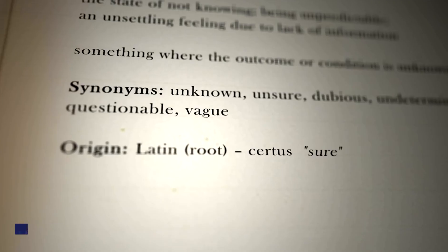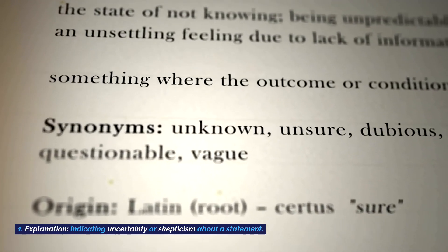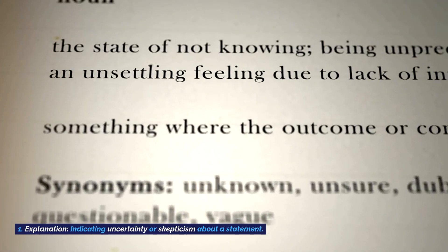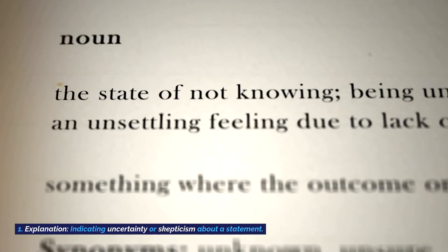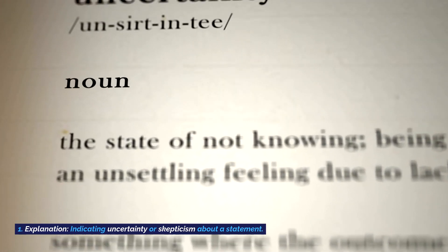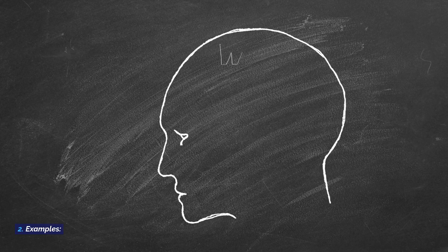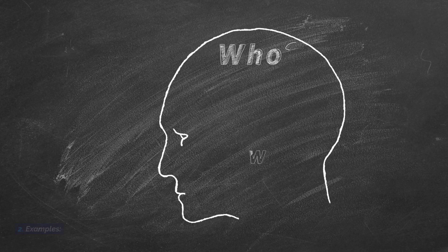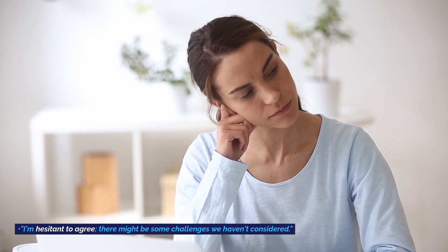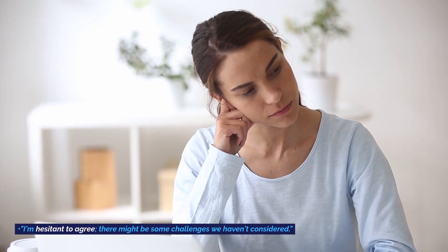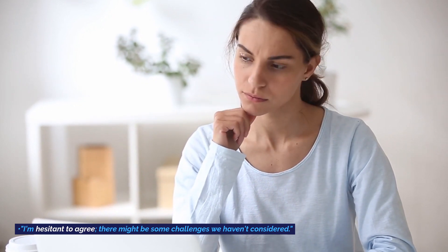Expressing doubt. Explanation: indicating uncertainty or skepticism about a statement. Examples: 'I'm not entirely convinced that's the best approach.' 'I'm hesitant to agree. There might be some challenges we haven't considered.'